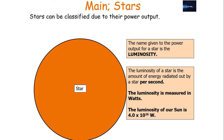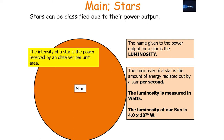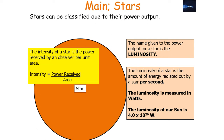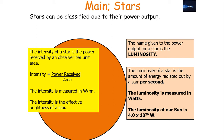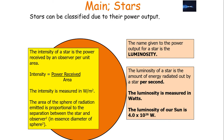Luminosity is measured in watts, and the luminosity of our own Sun is 4.0 × 10²⁶ watts. The intensity of a star is the power received by an observer per unit area, so intensity equals power over area, measured in watts per metre squared. The intensity is the effective brightness of the star — how bright the star appears to the observer.